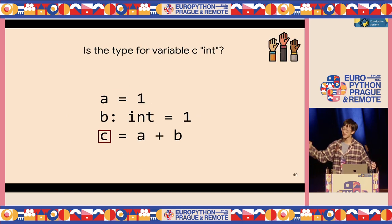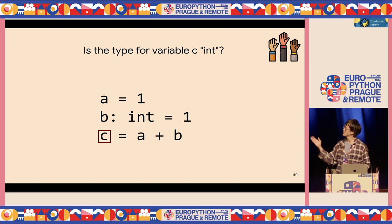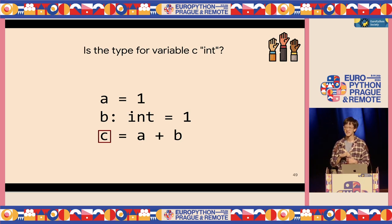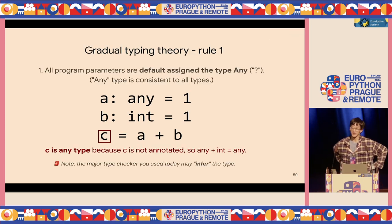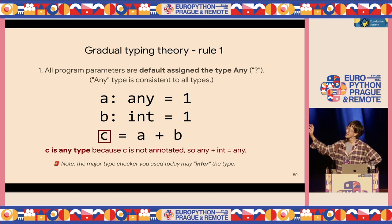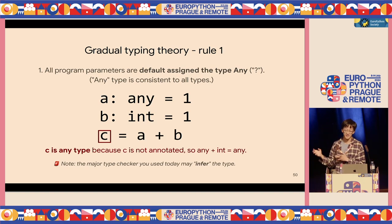Third question: we have A with no annotation assigned to 1, and B annotated as integer. What will C's type be — is it integer? This is actually tricky. In gradual typing theory, if you don't assign a type, A is assigned any type, and any type plus integer is any type. But in the real world, Python type checkers don't work this way — A will be inferred as integer type, and C will also be integer type.